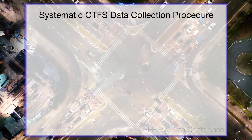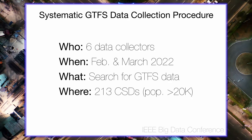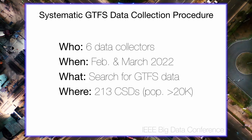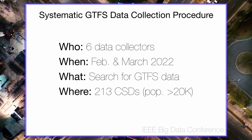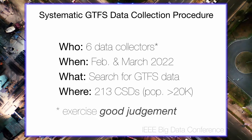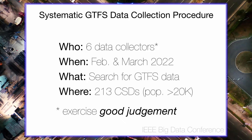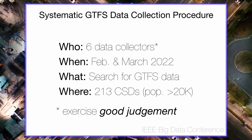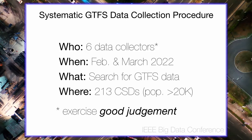As part of our systematic GTFS data collection procedure, we tasked six data collectors over two months — February and March 2022 — to comprehensively search for relevant GTFS data and alternative transit data for each of the 213 CSDs with a population greater than 20,000. Given the unstructured nature of hosted GTFS data, the collectors were asked to exercise good judgment while searching all possible sources, including municipal open data portals, serving public transit authority websites, and crowdsourced repositories. The collectors also acquired information on additional relevant metadata such as the transit authority, authors of the data, contact information, and how recent the data was.